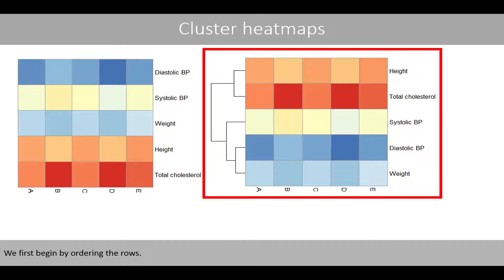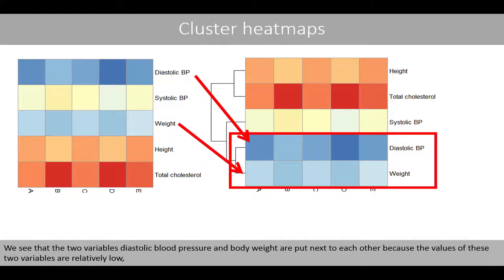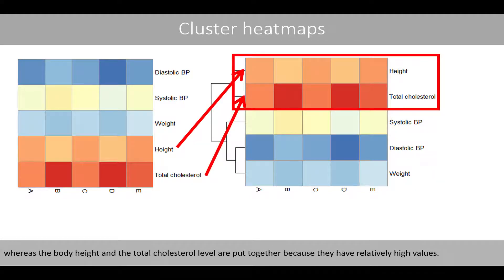We first begin by ordering the rows. This part of the heatmap shows the dendrogram of the hierarchical clustering based on average linkage and the Euclidean distance. We see that the two variables, diastolic blood pressure and body weight, are put next to each other because their values are relatively low, whereas body height and total cholesterol level are put together because they have relatively high values.